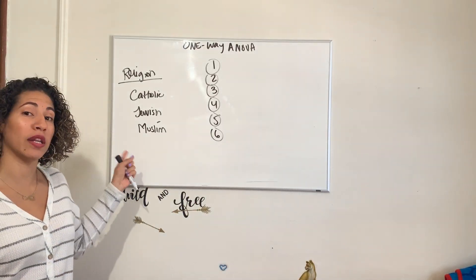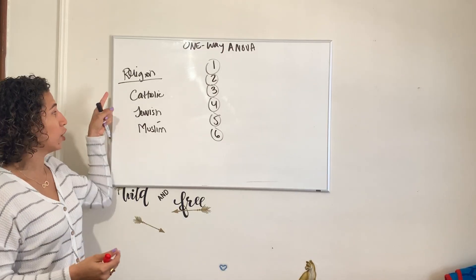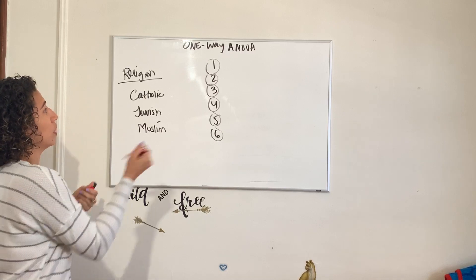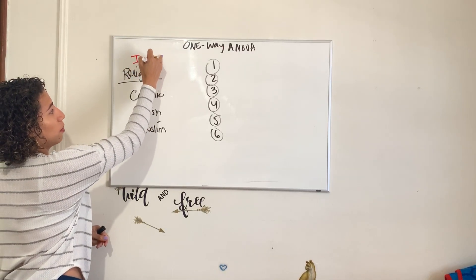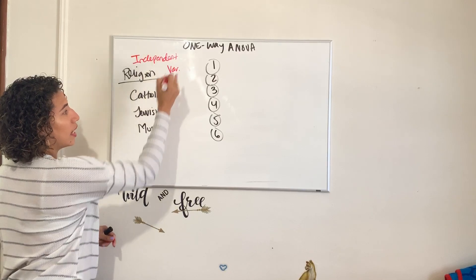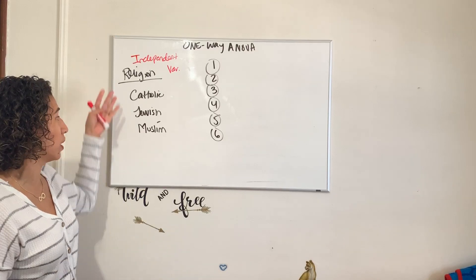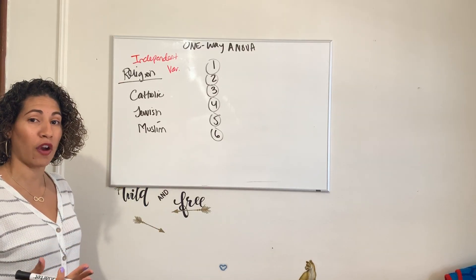If we're looking at the independent variable, what am I controlling? I'm controlling religion. I chose three different religions, so this becomes our independent variable. What do I want to measure about my independent variable? My dependent variable, which actually leads us to our first assumption.